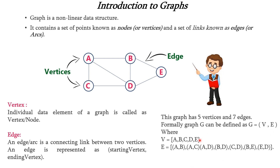So vertices can be written as A, B, C, D, E. We know that the circled entities are called as vertices, so totally we have five vertices A, B, C, D and E. And edges — we have seven — that is we can represent them as pairs which comprise a starting vertex and ending vertex. So we can write them as pairs: (A,B), (A,C), (A,D), (B,D), (C,D), (B,E) and (E,D).